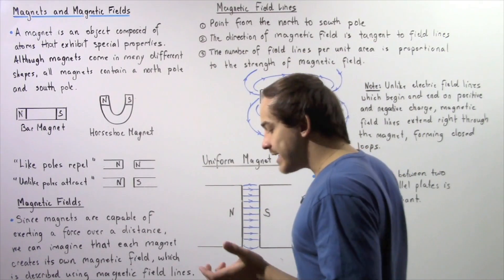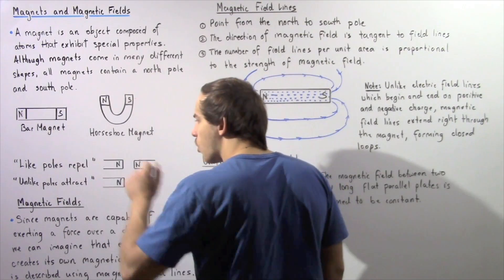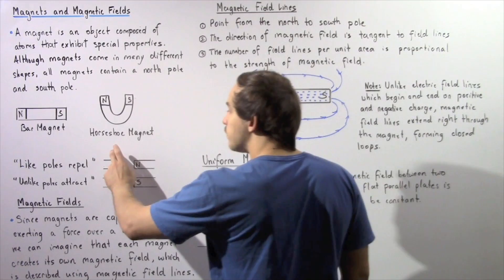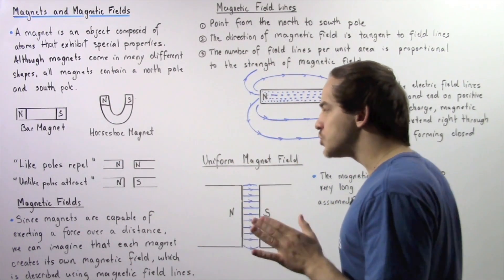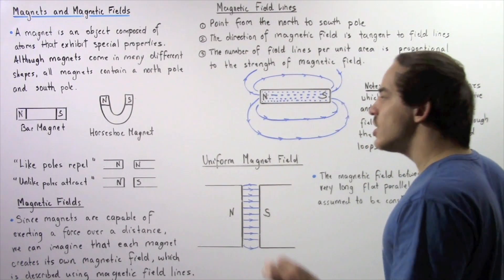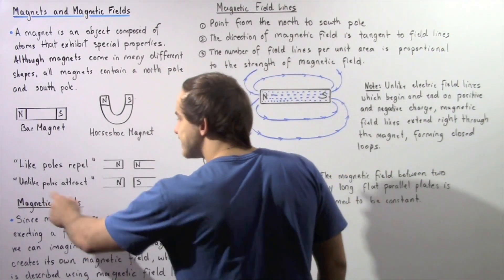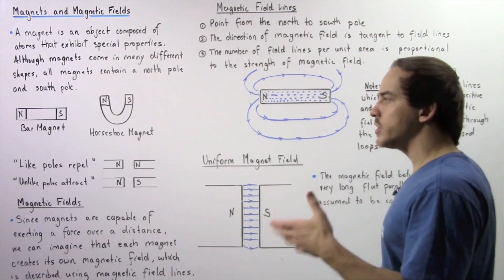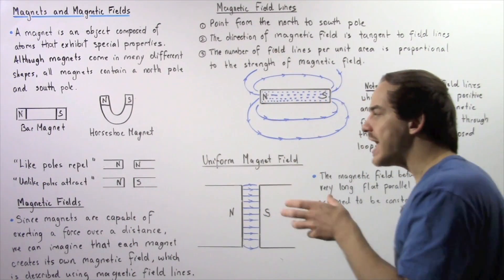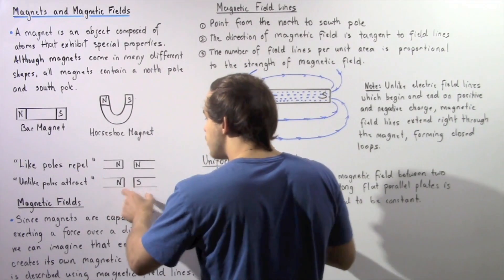In the same exact way that like charges will repel one another and unlike charges will attract one another, we have like poles that will repel and unlike poles that will attract. So if we take the north side of our bar magnet and bring it close to the north side of a second magnet, because these are like poles, they will exert a repulsive magnetic force on one another. If we take the north pole of one magnet and bring it close to the south pole of a second magnet, because these are unlike poles, they will create an attractive magnetic force.